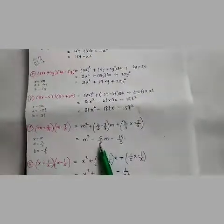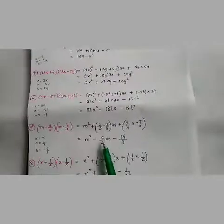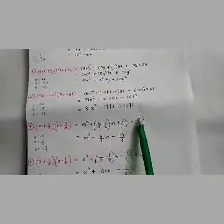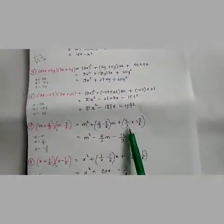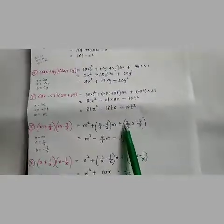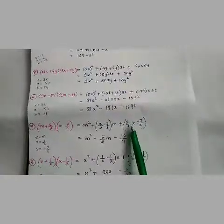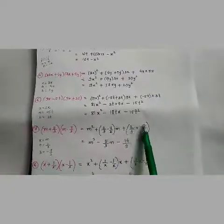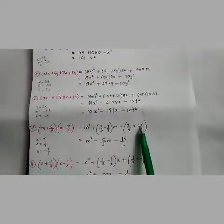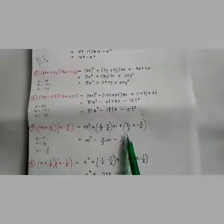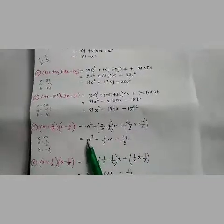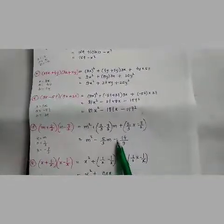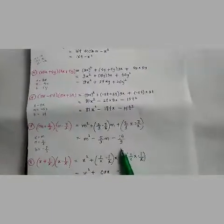Because the denominator is the same, we write minus 5/3 as it is, into m. Now for a×b: 2/3 into minus 7/3. In multiplication we directly multiply: 2×7 is 14, minus × plus is minus, 3×3 is 9, giving minus 14/9. So the answer is m² - (5/3)m - 14/9.